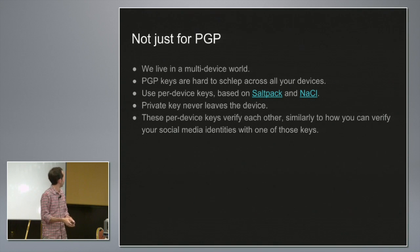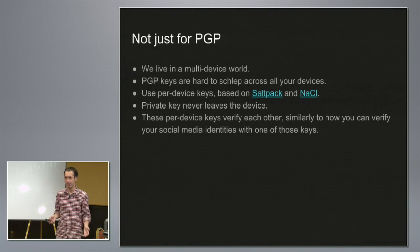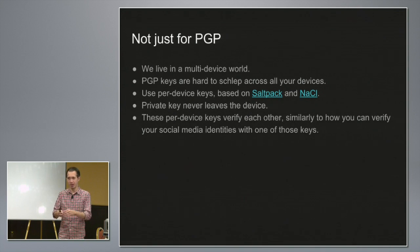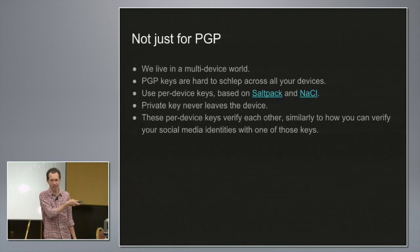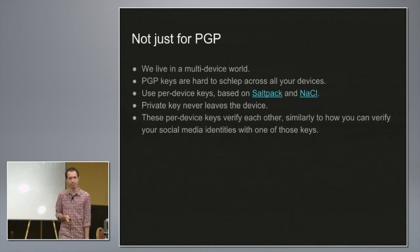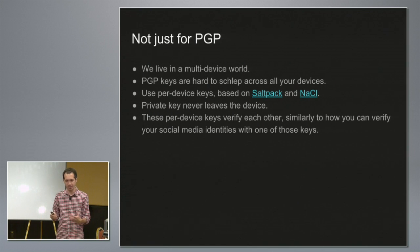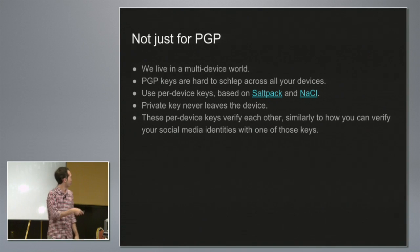One other problem with PGP is that now we live in a multi-device world, and PGP keys are intended to be one key shared among all your devices — that doesn't really scale, especially with mobile. How do you get your PGP key on your phone? So what Keybase does is use per-device keys. We base it on NaCl — it's pronounced 'salt' but written NACL — and something we wrote called saltpack. NaCl is a crypto library written by Daniel Bernstein, and it does crypto in a much simpler way than PGP. PGP has a lot of knobs you can twiddle, aka a lot of ways to shoot yourself in the foot, and NaCl avoids some of that. Once you generate a device key, it never leaves your device.